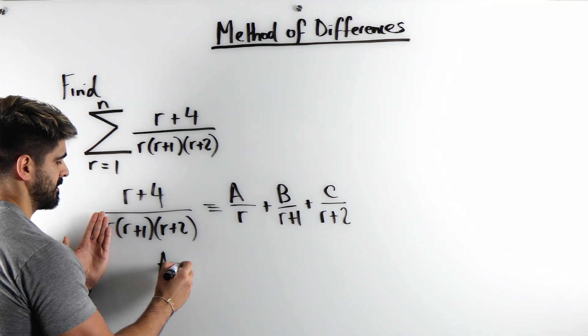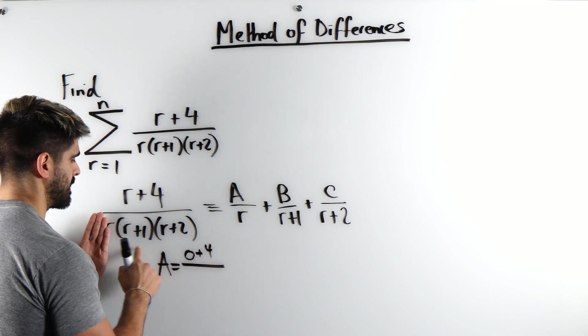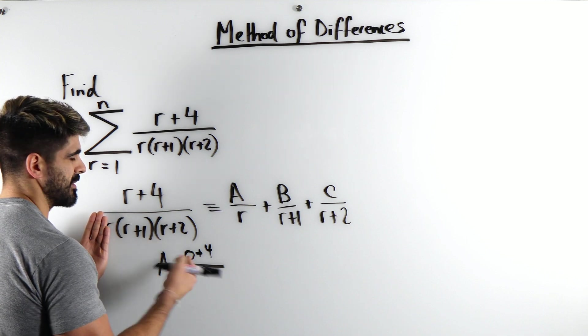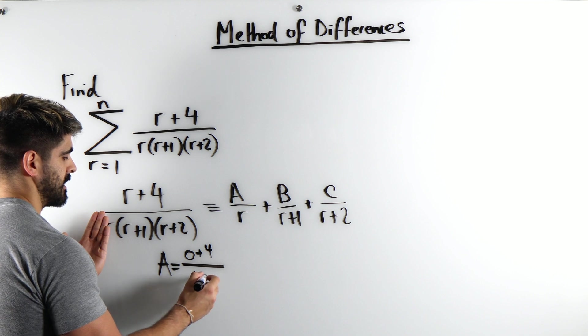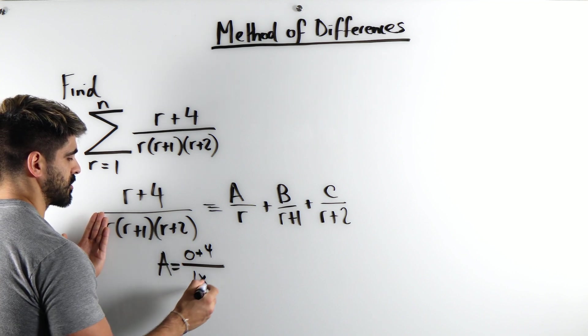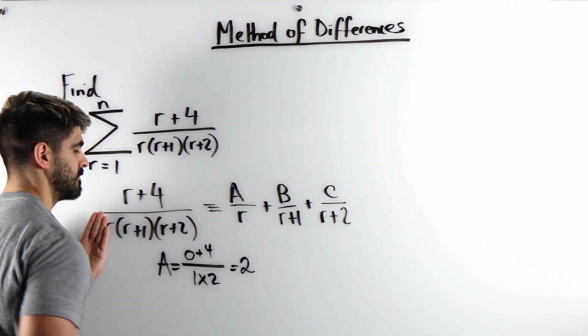So in this case A is 0 plus 4 divided by 0 plus 1, I mean I didn't need to write 0 plus 4, but 0 plus 1 is 1 times 0 plus 2 which is 2. 4 divided by 2 is 2. Easy mate.